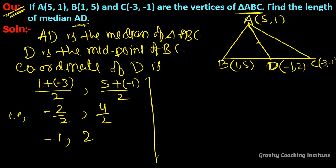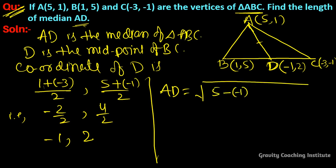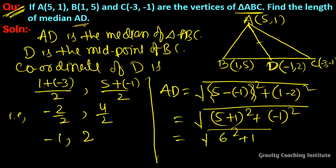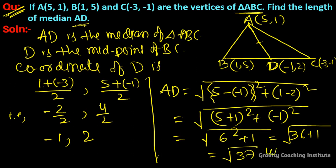Now we use the distance formula. AD equals root under (5 minus (-1)) whole square plus (1 minus 2) whole square. That equals root under (5 plus 1) whole square plus (-1) whole square, which is root under 6 squared plus 1 squared, so root under 36 plus 1, which equals root 37 units. This is our required answer.